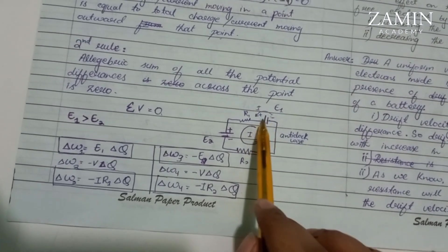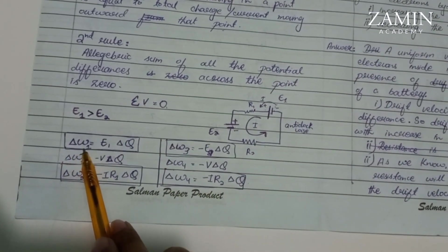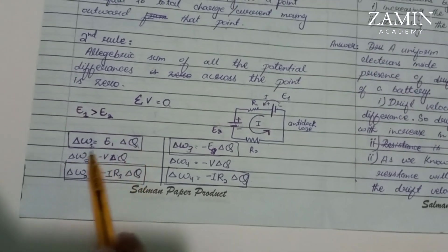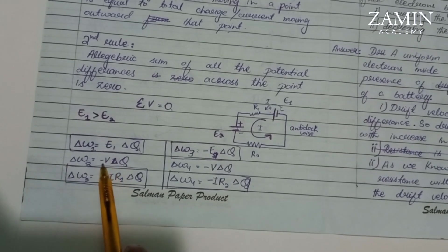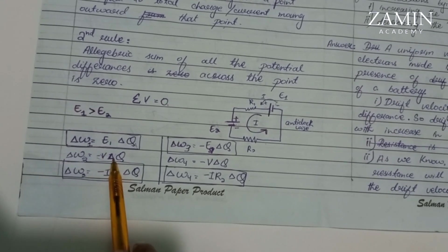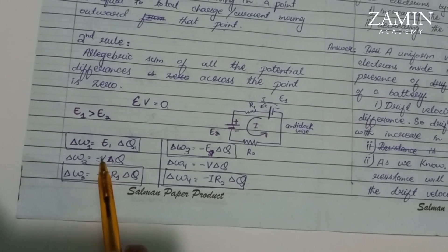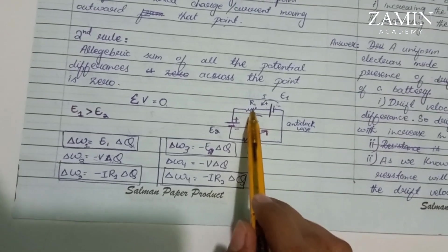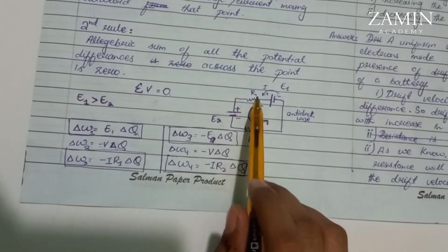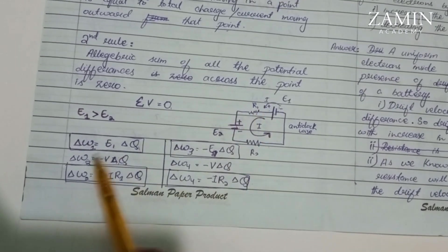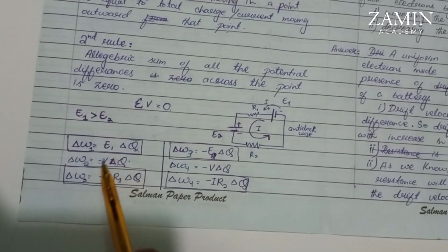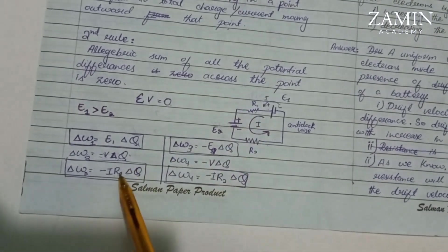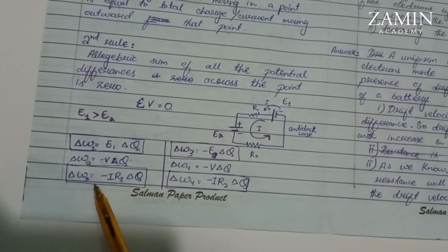Now we need to calculate work done. We start with work done 1: W1 is E1 times delta q. For work done 2, we have V times delta q. Since this is a resistor, it causes hindrance and dissipates energy, so we write minus V times delta q. Now V equals IR, so we have minus i times R1 times delta q.